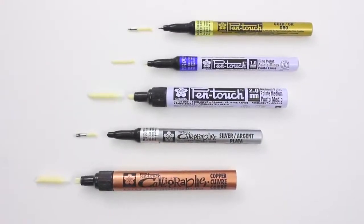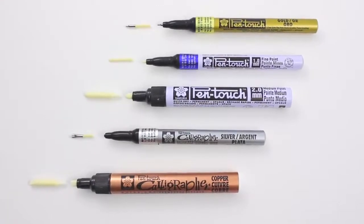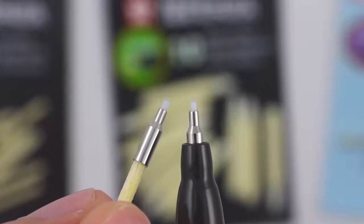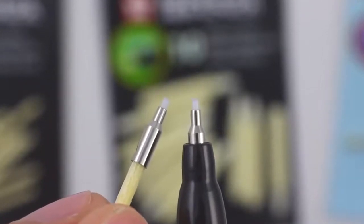Each replacement tip will only work with its corresponding barrel. For example, the 0.7mm Extra Fine nib is only compatible with the Extra Fine Pentouch marker.